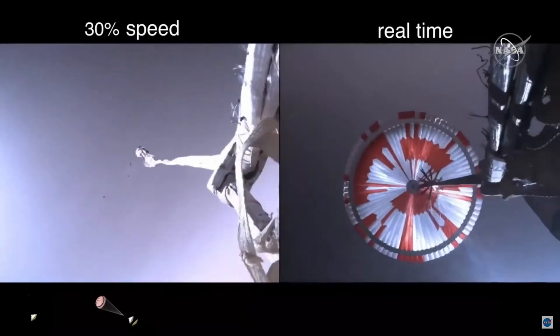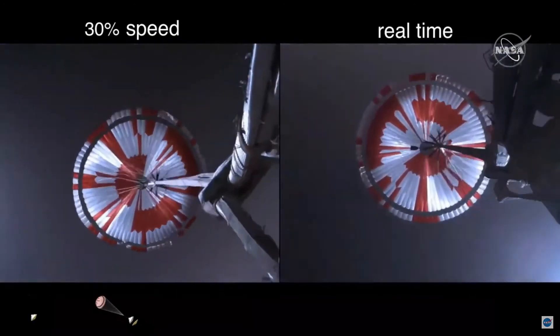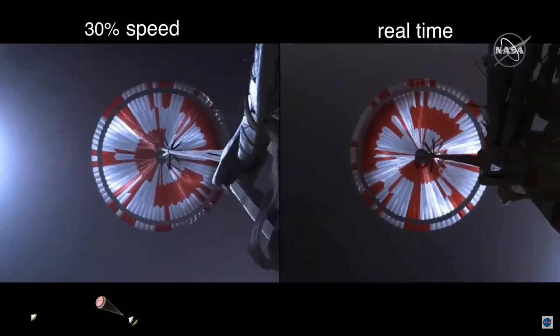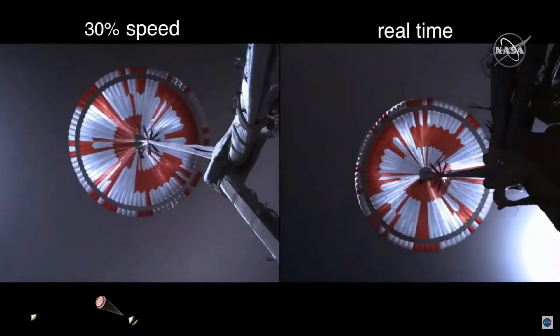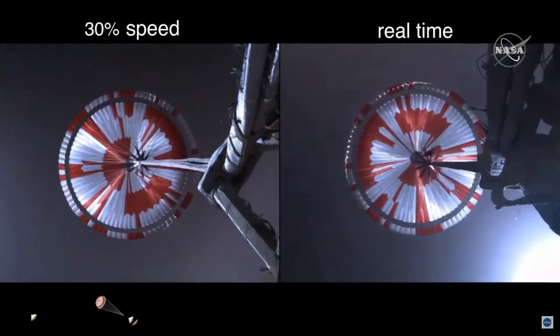Telemetry indicates parachute deploy. Navigation has confirmed that the parachute has deployed, and we are seeing significant deceleration in velocity. Our current velocity is 480 meters per second at an altitude of about 12 kilometers from the surface of Mars.